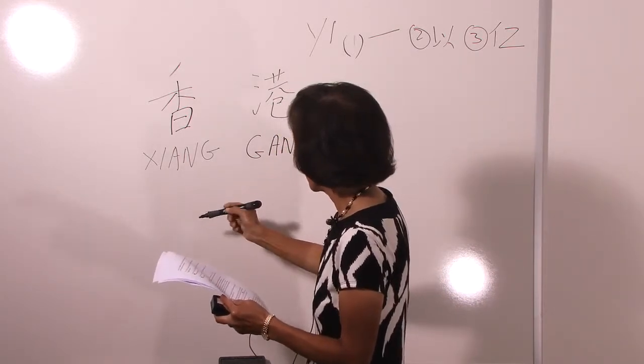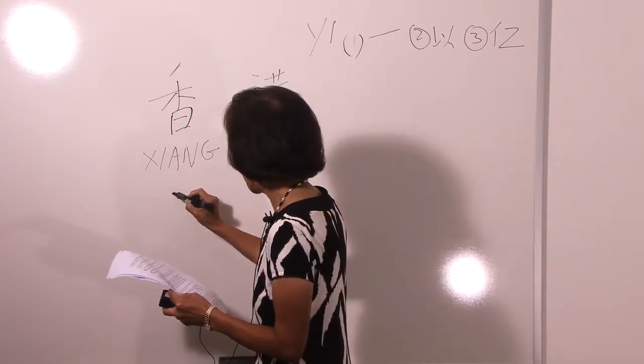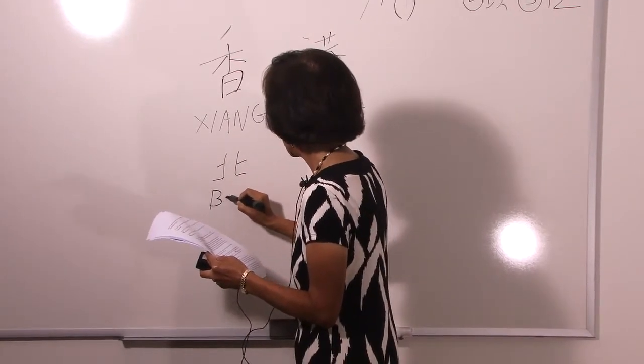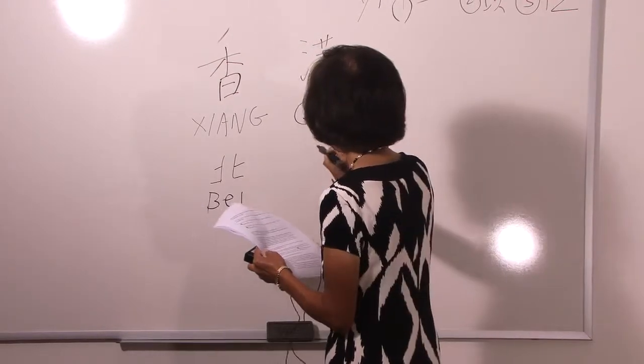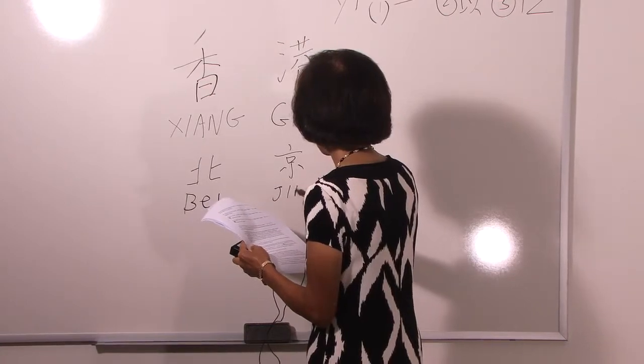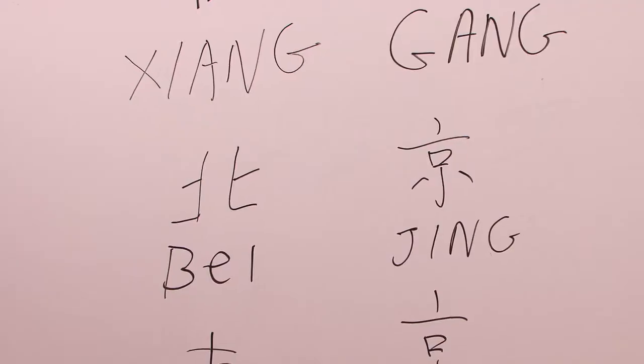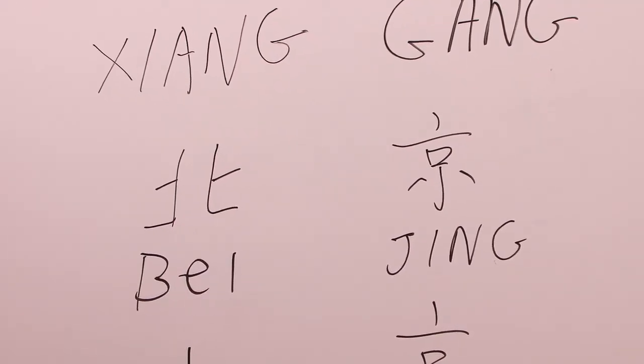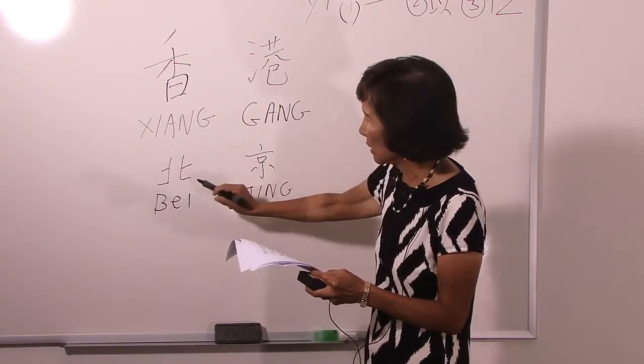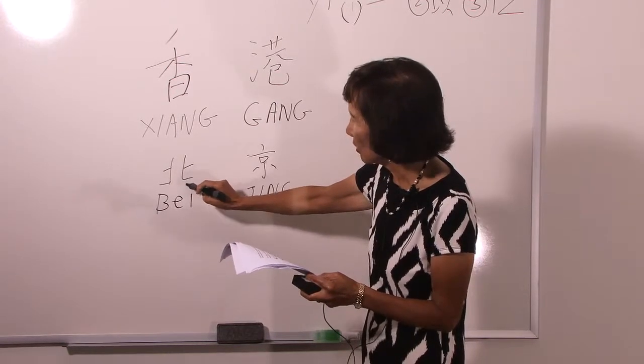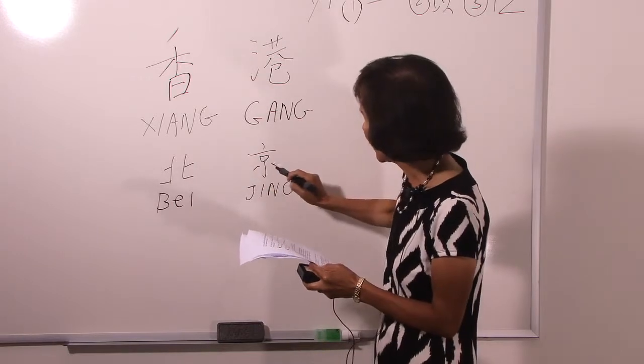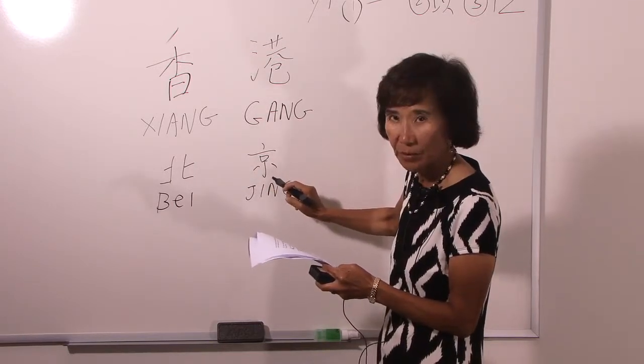The next city is Beijing. Beijing means north. Beijing means capital. Beijing, northern capital. If you look at this word, from now on you will know this means north. When you look at this word from now on, remember this means capital.